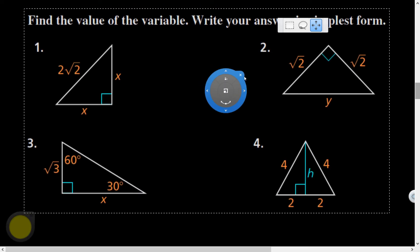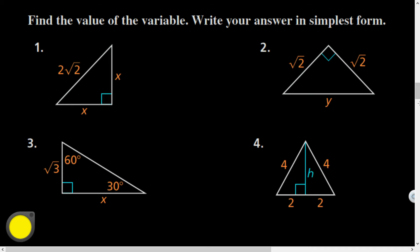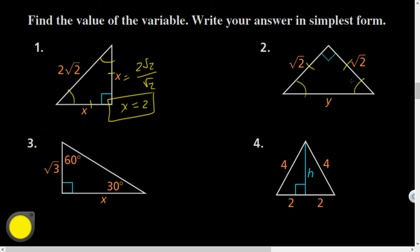Problem 1: It's isosceles by the base angles theorem, so it's a 45-45-90. To go from the hypotenuse to a leg, divide by √2. So x = 2√2 ÷ √2 = 2. Done. Problem 2: The base angles are congruent, and solving for the unknown angle gives 45-45-90. To go from the short leg to the hypotenuse, multiply by √2. So y = √2 × √2 = √4 = 2.